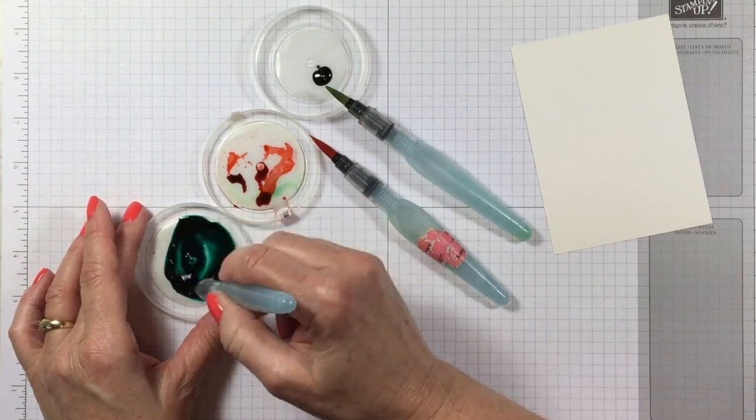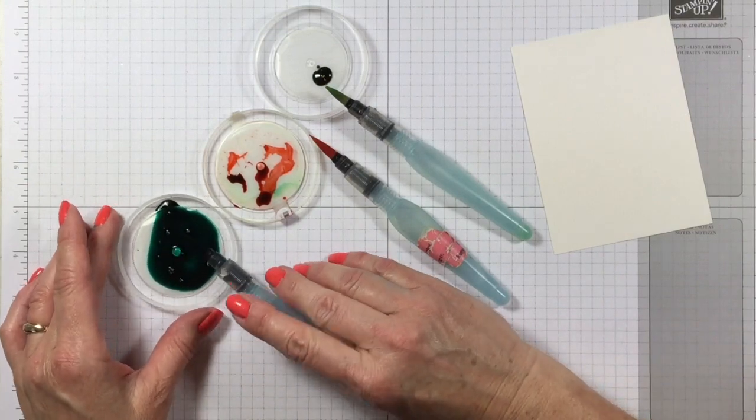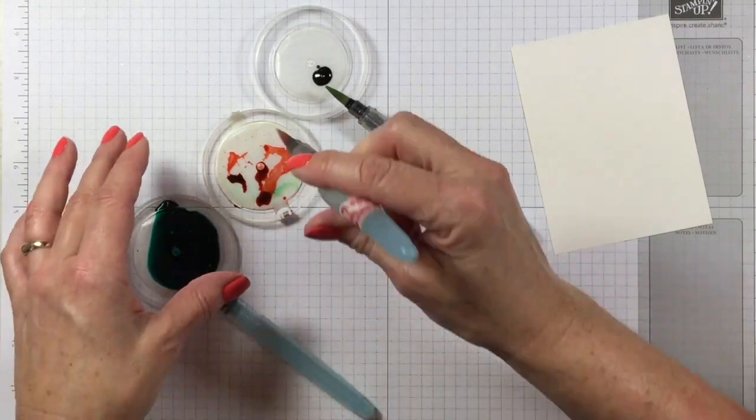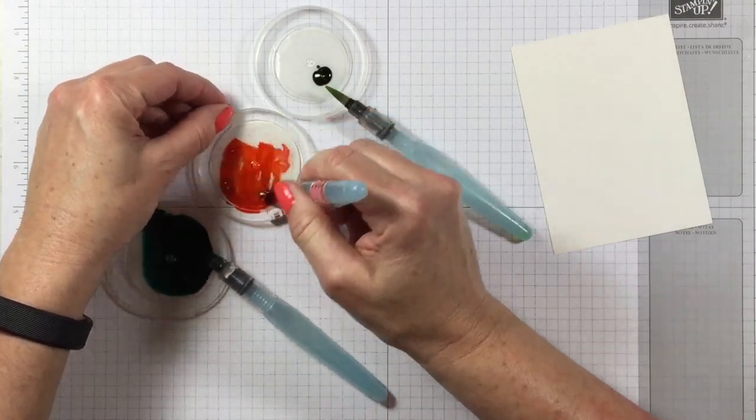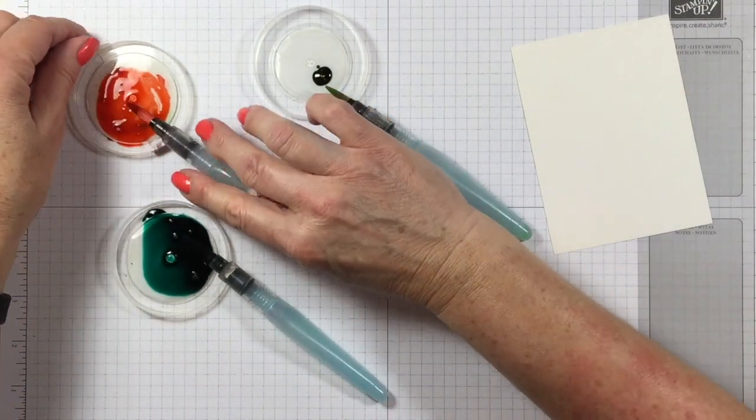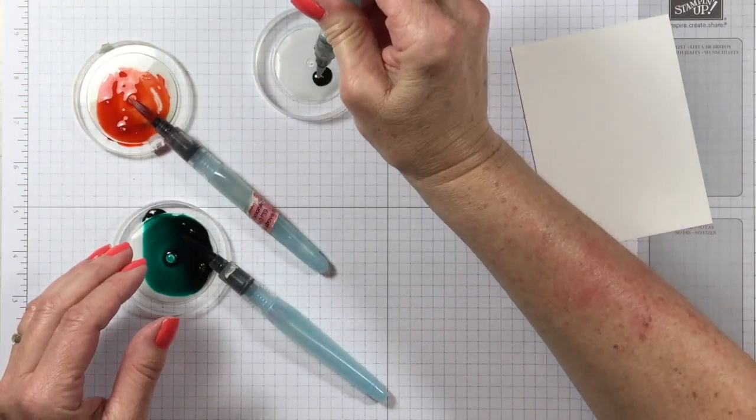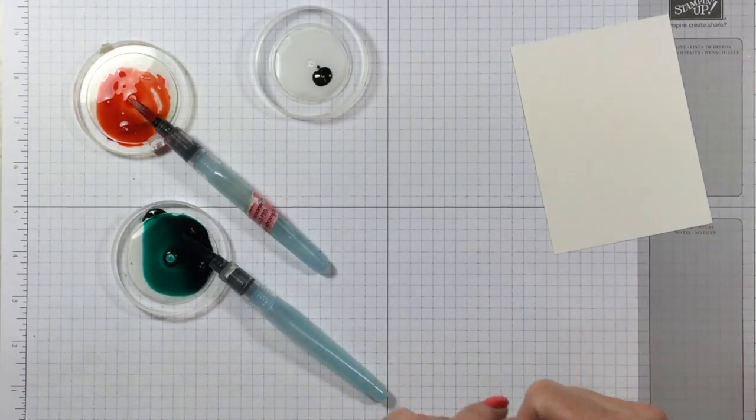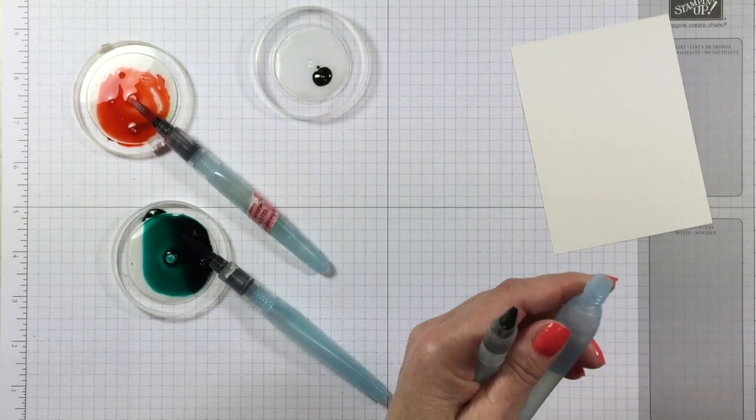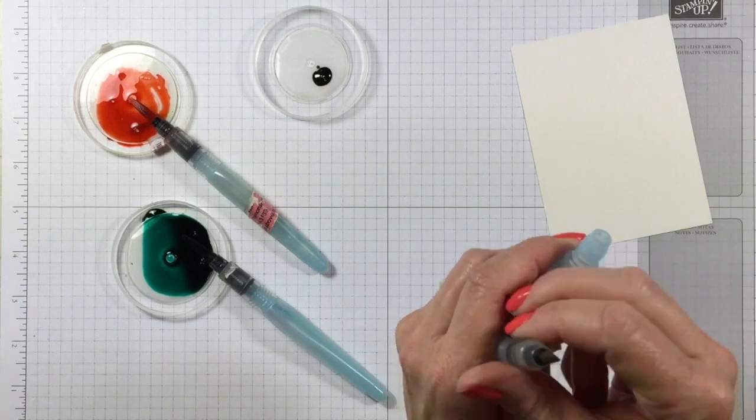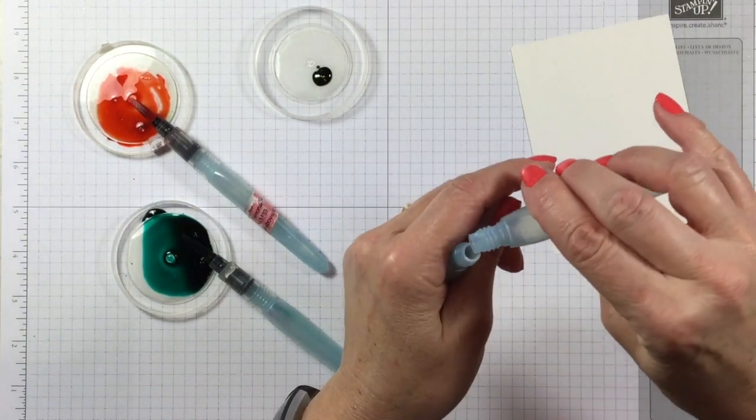But you do want to make sure that you use more water if you are using the reinkers, of course, because your color is much more concentrated. And I'm just going to add the water to all three of my colors here so that they're ready to roll. Oh, great. And this aqua painter is empty. Technical difficulty. I'm just going to steal some water out of this aqua painter.